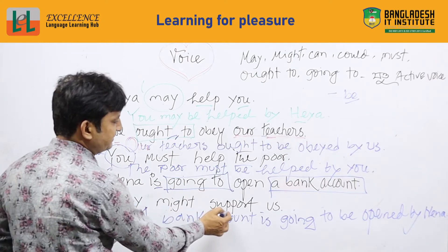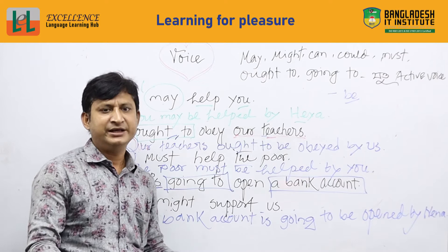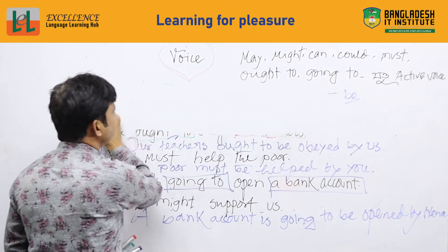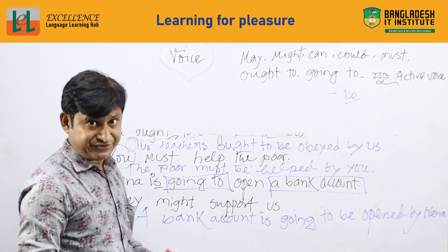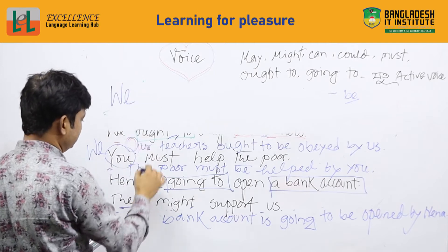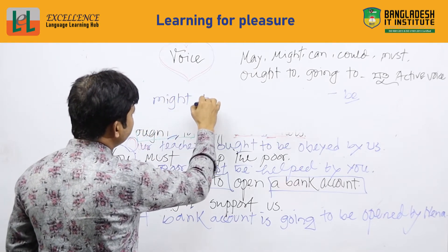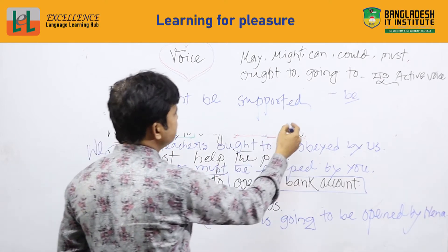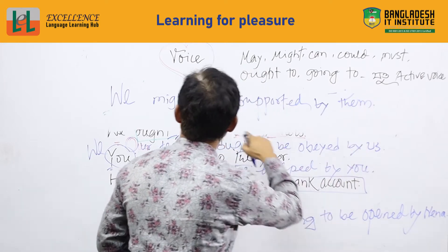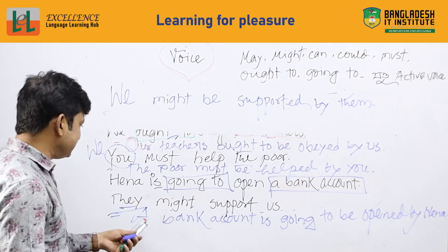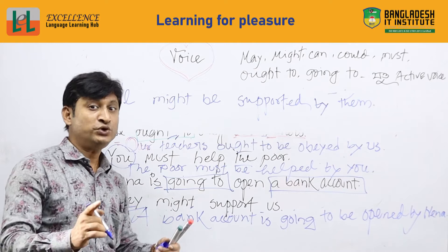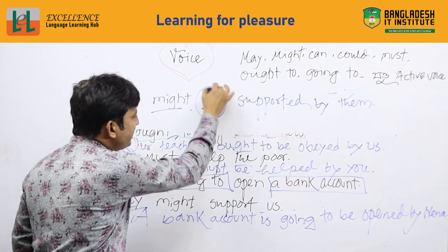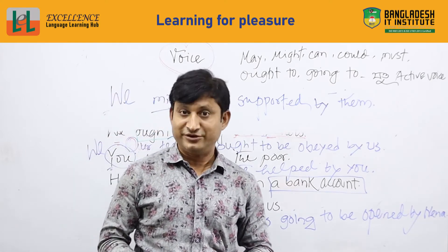The next one: 'They might support us.' Here 'might' is an auxiliary modal verb. To make it passive, 'us' is in objective form, so it becomes 'we'. We write: 'We might be supported by them.' Because with 'might', we use 'be', and the verb is in past participle form. The active voice is 'They might support us', and passive is 'We might be supported by them'.